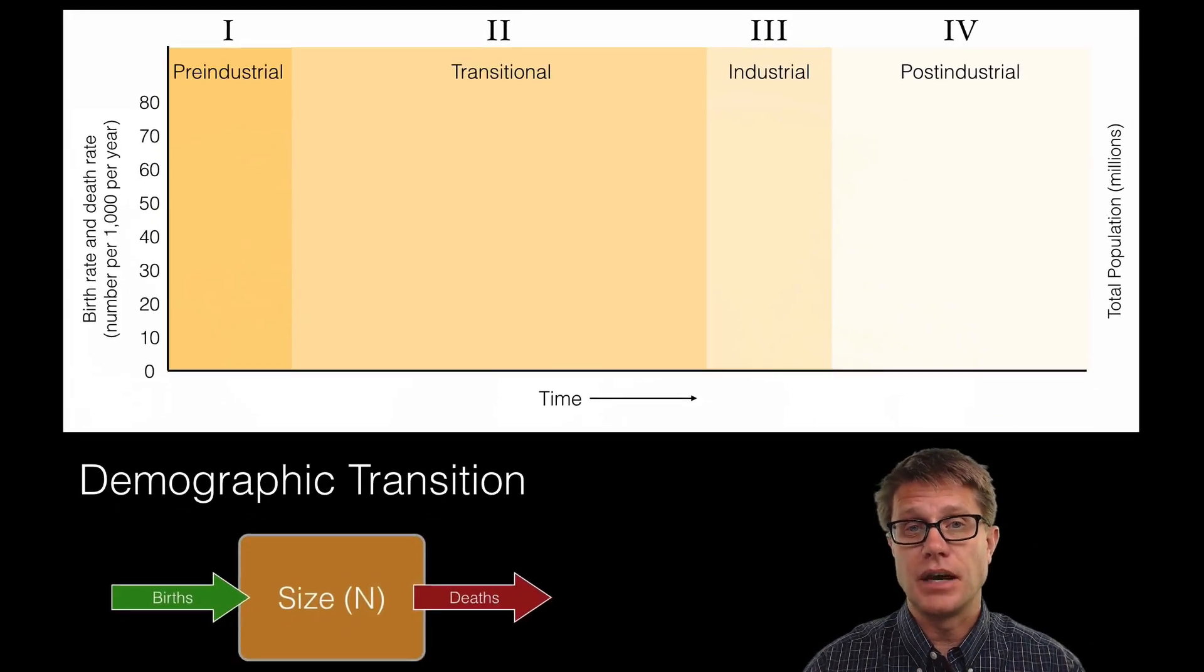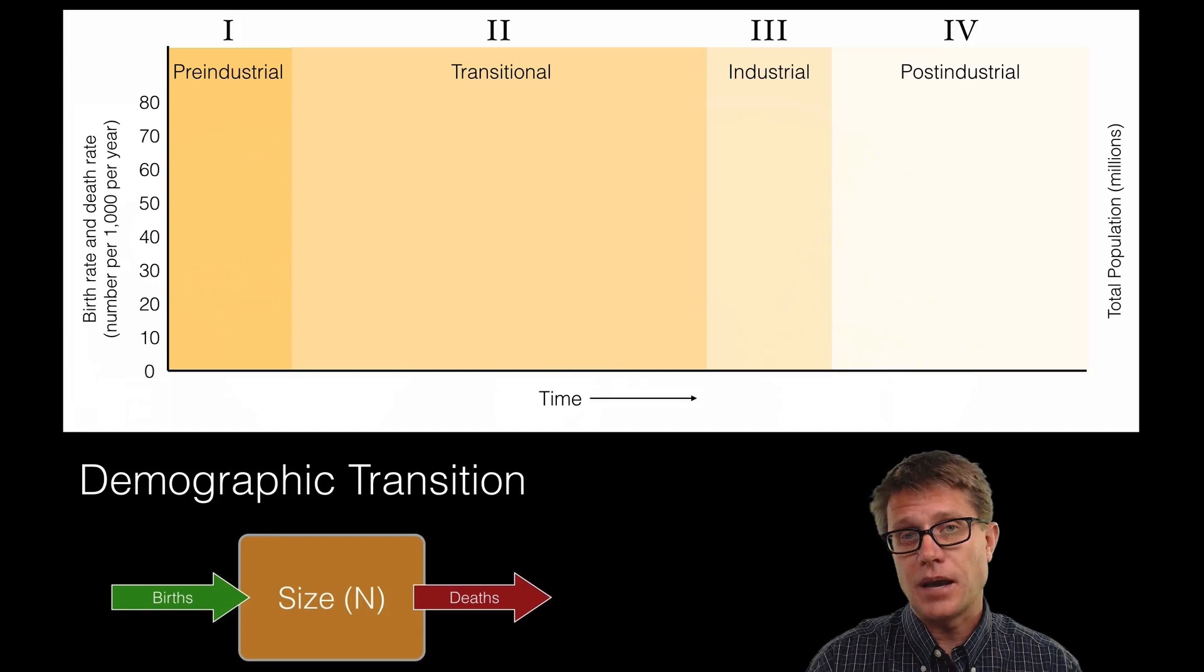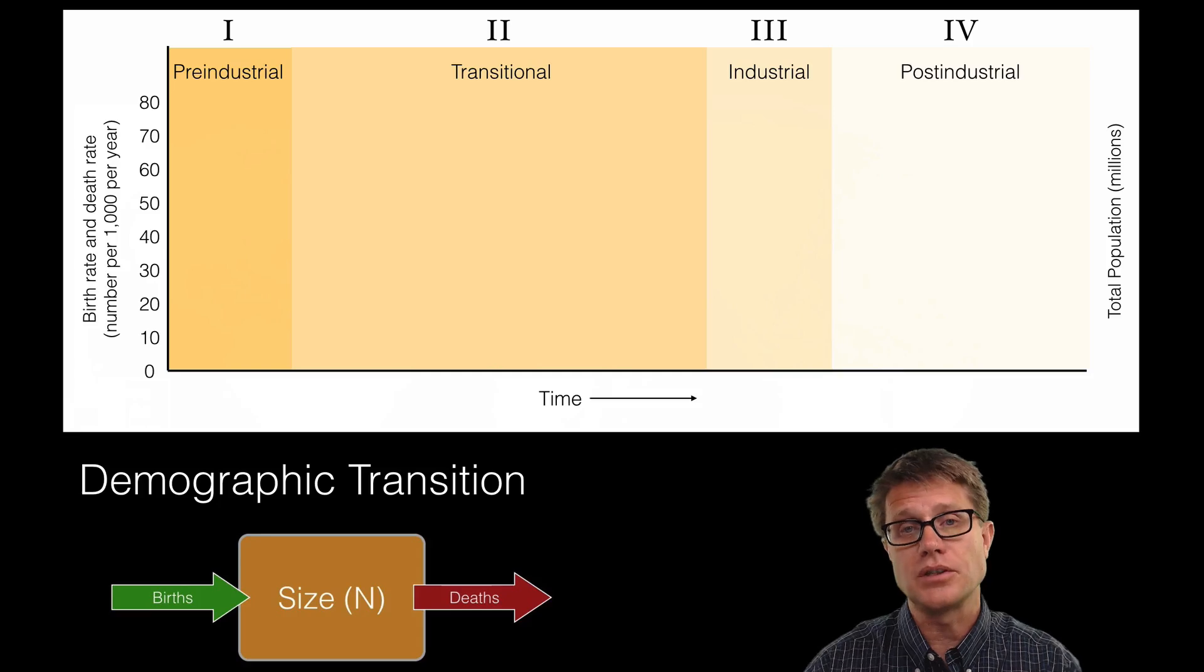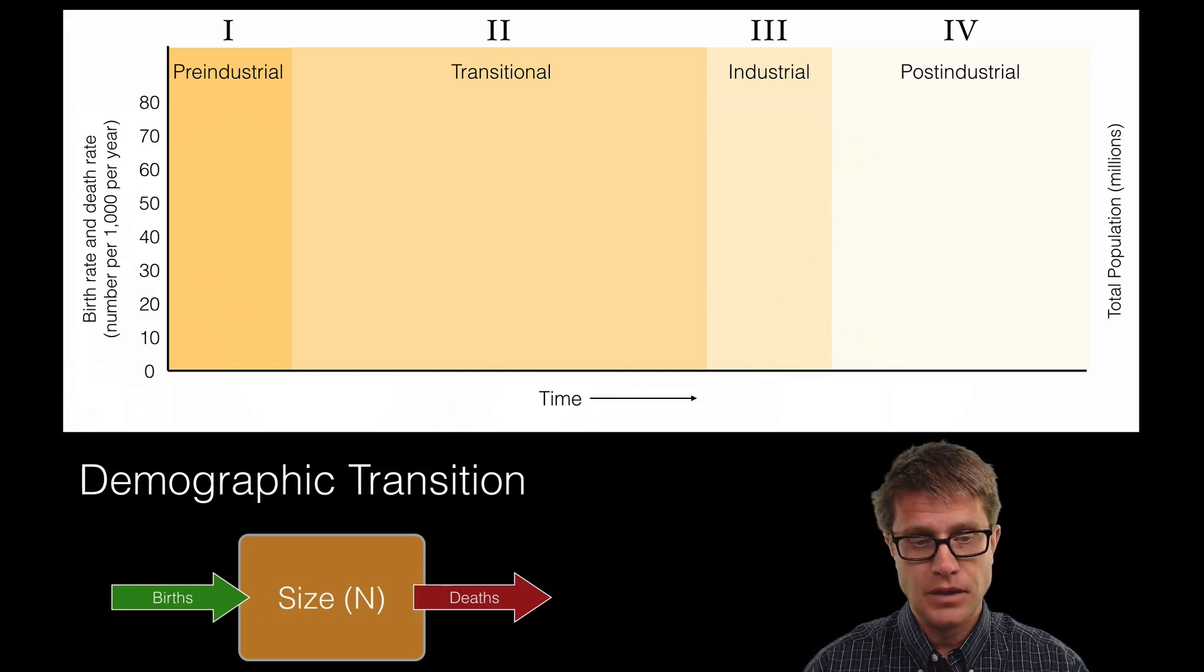And so what I have been alluding to is this demographic transition. What happens as a country is industrialized? What happens as it goes from a pre-industrial to a post-industrial country? And a really good model is called the demographic transition. So births are going to be in green. Deaths are going to be in red.